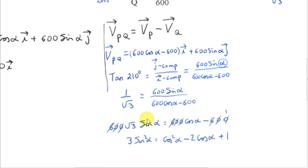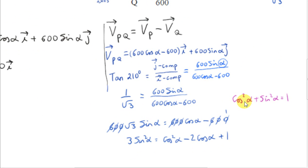To solve this equation, one way is to square both sides. Squaring the left-hand side gives 3 sine squared alpha. Squaring the right-hand side gives an expression involving cos alpha only. We can replace sine squared alpha using the identity sin²α = 1 − cos²α, giving an equation entirely in terms of cos alpha. By squaring both sides and using this identity, we rewrite our equation as a quadratic equation. Instead of writing cos alpha, we write x, so x equals cos alpha.